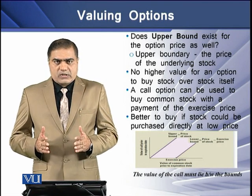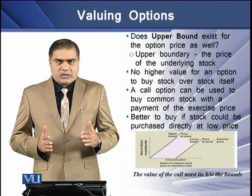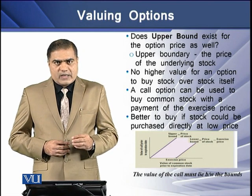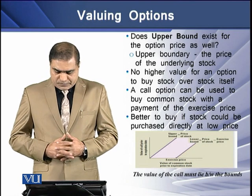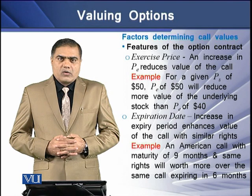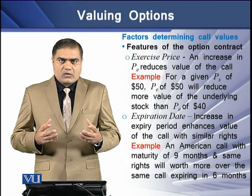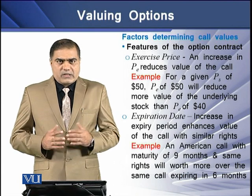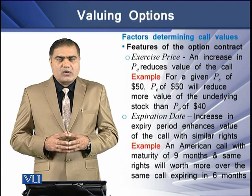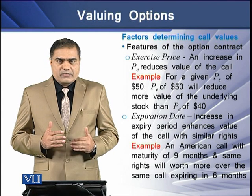In the graph, we see two bounds colored in red — the value of the call lies between these two bounds. What are the factors that determine the value of a call contract? These factors can be grouped into two classes: the first class is the features of the option contract itself.